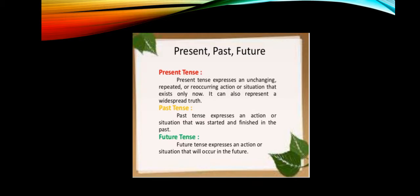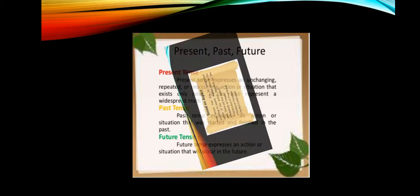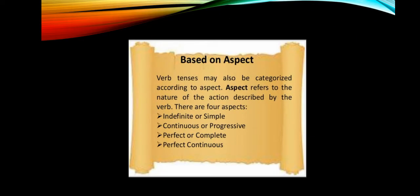Past tense expresses an action or situation that was started and finished in the past — everything past, completed actions. Future tense expresses an action or situation that will occur in the future, and we denote future time actions in the future tense.